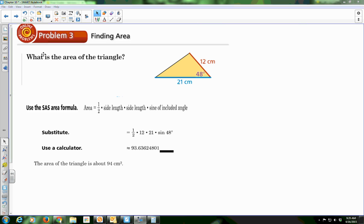Alright, so we're going to talk about finding the area of a triangle when you have a side, an included angle, and a side. So the side-angle-side area formula is 1 half of the side length times the other side length times the sine of the included angle. So for this scenario here, we have 1 half times 12 times 21 times the sine of 48. If we use a calculator to crunch this out, we get 93.63. So the area of the triangle is about 94 square centimeters.